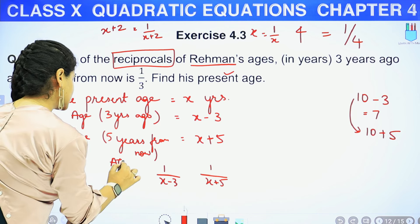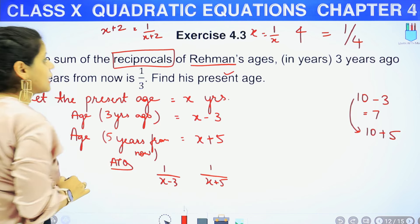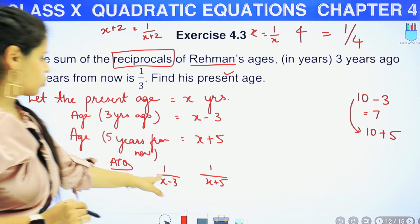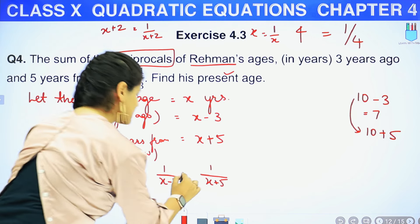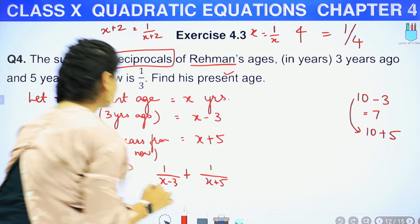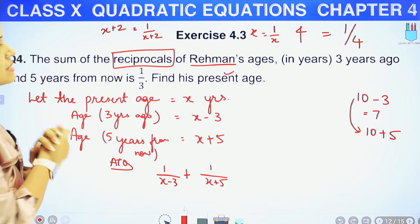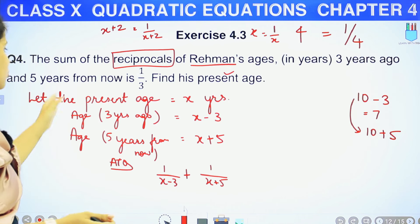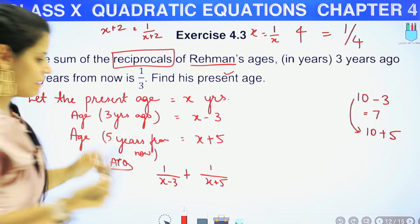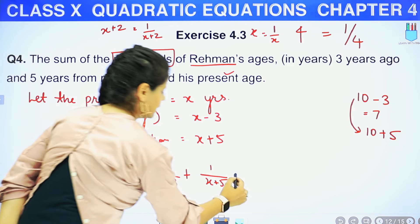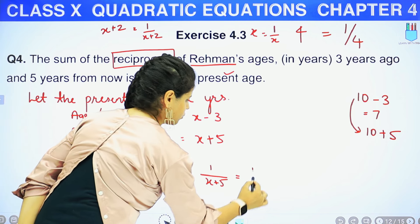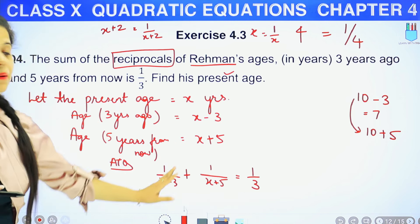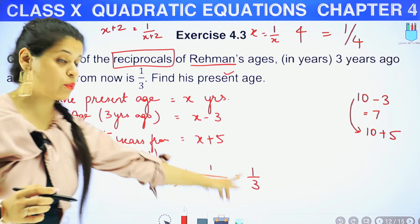Now according to the question, देख लेते हैं question में क्या बोला है: the sum of the reciprocals of Rehman's age 3 years ago and 5 years from now is 1 upon 3. So our equation is: 1/(X-3) + 1/(X+5) = 1/3. यहाँ तक हमें मिल गई अपनी equation.